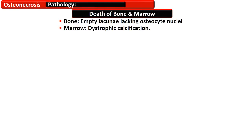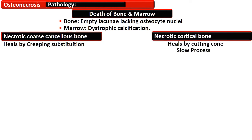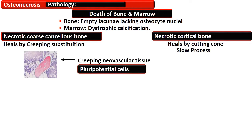Osteonecrosis is associated with death of the bone and marrow. The bone shows empty lacunae with no osteocyte nuclei, and the marrow shows dystrophic calcification. In this picture, you can see empty lacunae which do not contain any osteocyte nuclei, and there is surrounding dystrophic calcification.